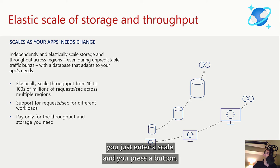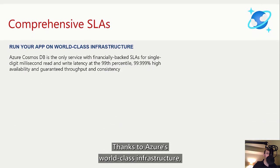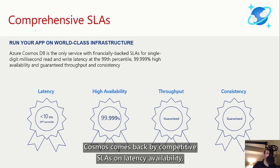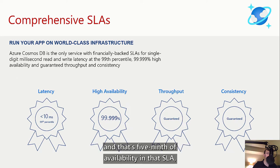You just enter a scale and press a button. Thanks to Azure's world-class infrastructure, Cosmos comes backed by competitive SLAs on latency, availability — that's five nines of availability in that SLA — as well as throughput and consistency.